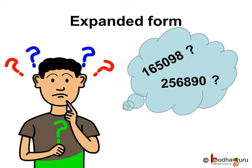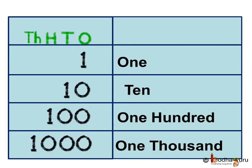This is the expanded form of 5637. What about large numbers like 1,65,098 or 2,56,890? You may think it will be hard to write these numbers in expanded form. Well, it won't be difficult if we do it stepwise.